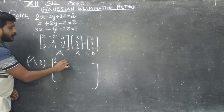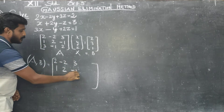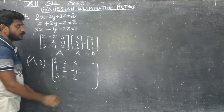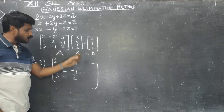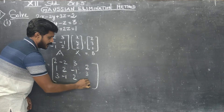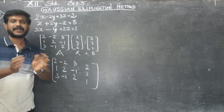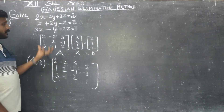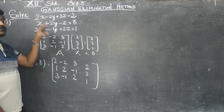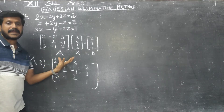Our A matrix is: 2, minus 2, 3; 1, 2, minus 1; 3, minus 1, 2. And B must be joined along with A: 2, 3, 1. This matrix is called the augmented matrix. We have joined A matrix and B matrix, converting the equations into matrix form.